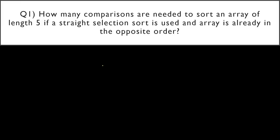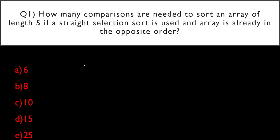Let us start with the first question. How many comparisons are needed to sort an array of length 5 if a straight selection sort is used and the array is already in the opposite order? Options: A) 6, B) 8, C) 10, D) 15, E) 25. Straight selection sort is nothing but a normal selection sort on an array.